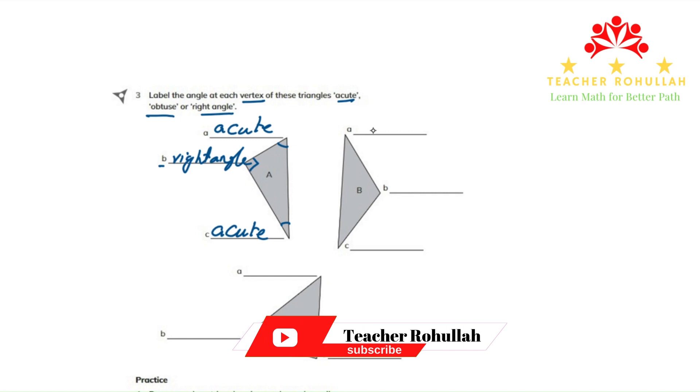In triangle B, angle A is acute. We know acute triangle is less than 90 degrees. And angle B is obtuse because it is more than 90 degrees. And angle C is also acute. This is also less than 90 degrees.